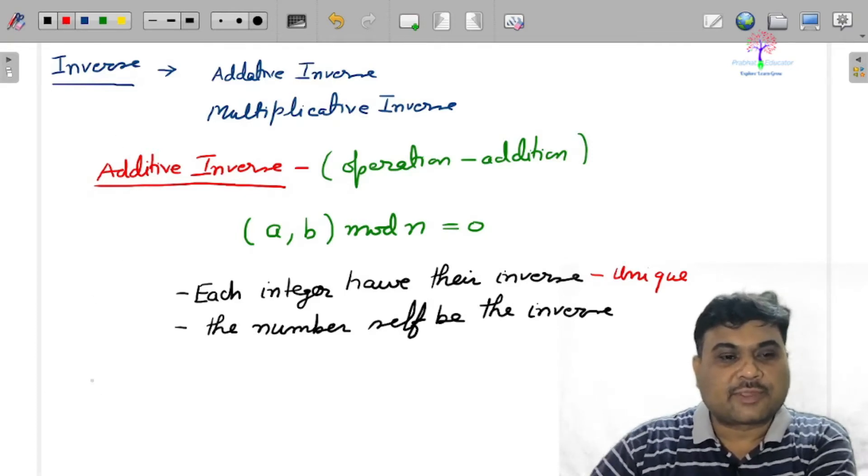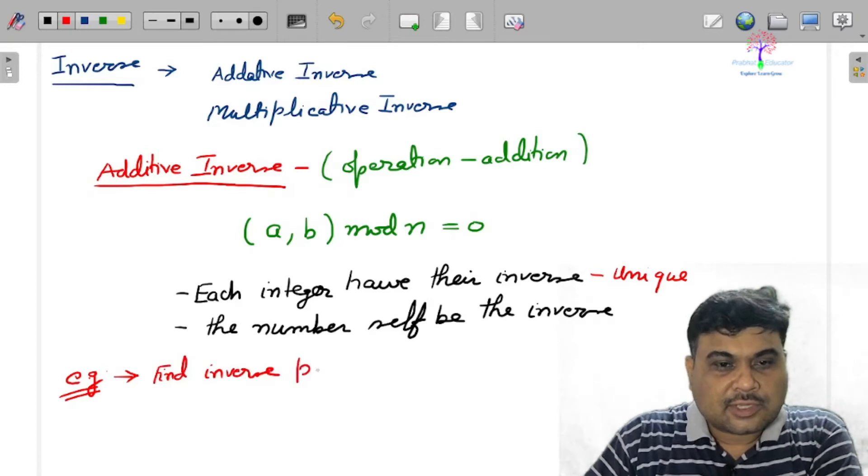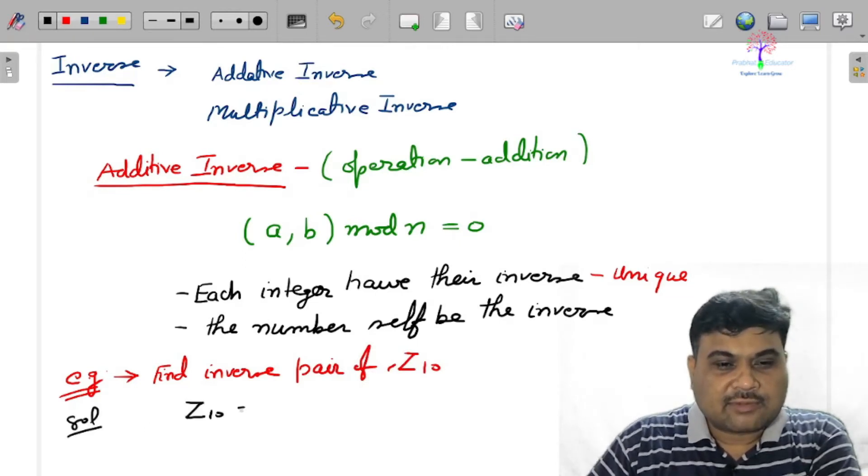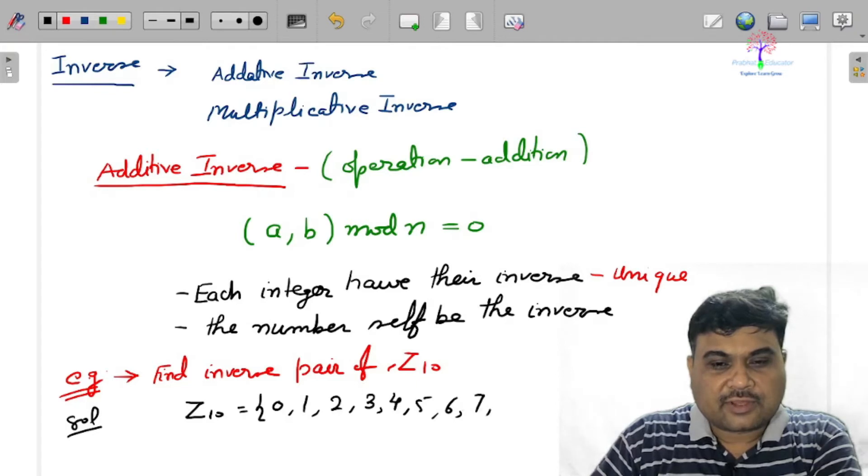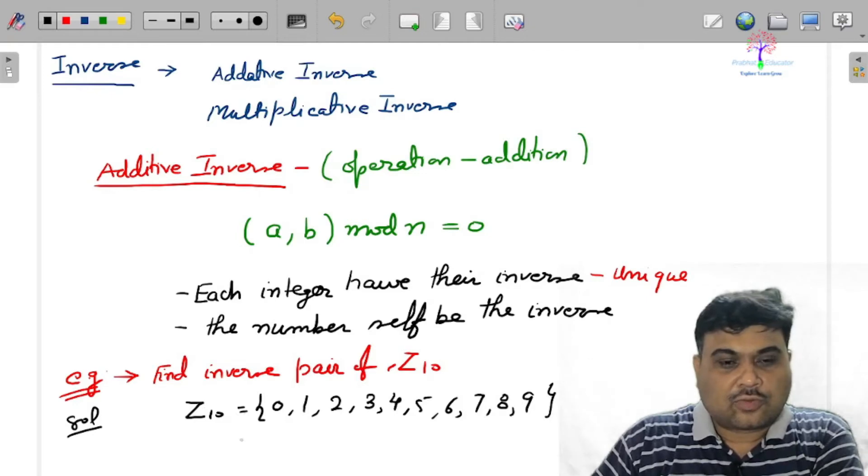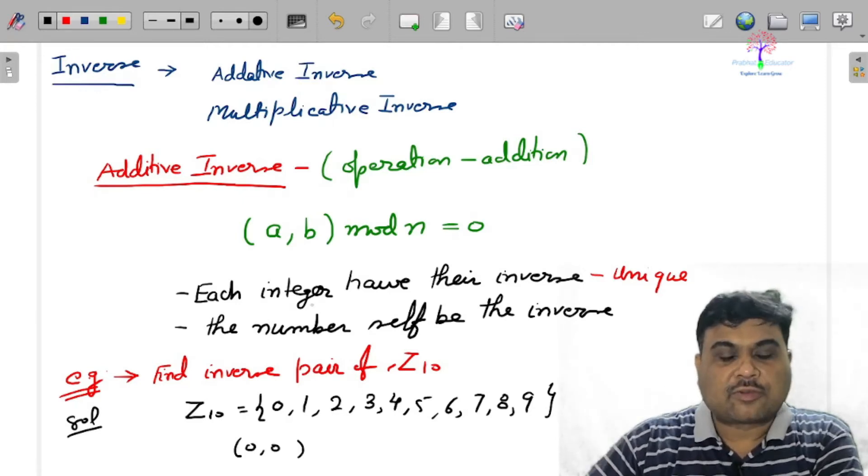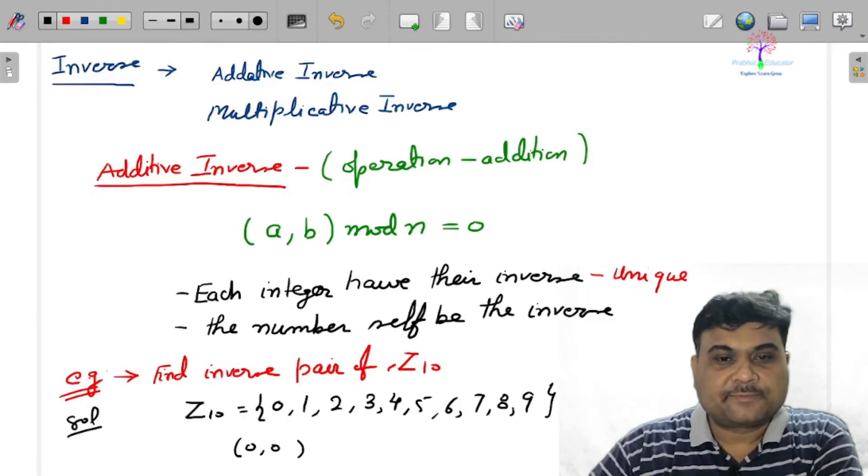Let's try to understand this with the help of some example. Find the inverse pair of Z10. What is the meaning of Z10? Z10 means it is a set of integers: 0, 1, 2, 3, 4, 5, 6, 7, 8, 9, all the remainders.